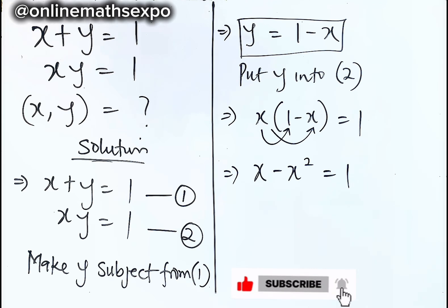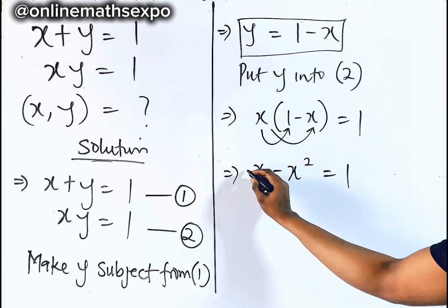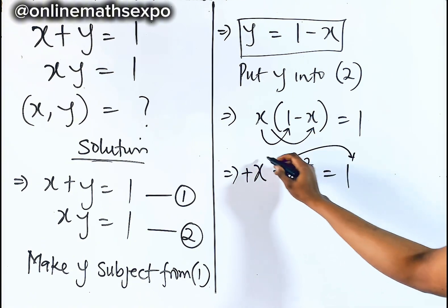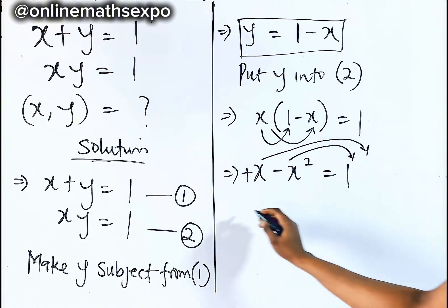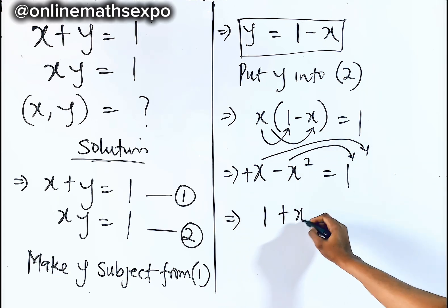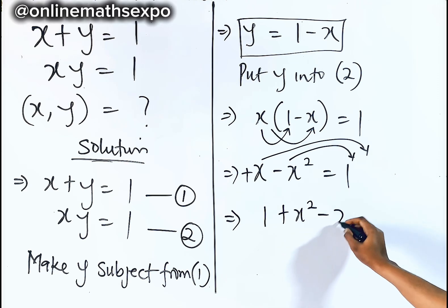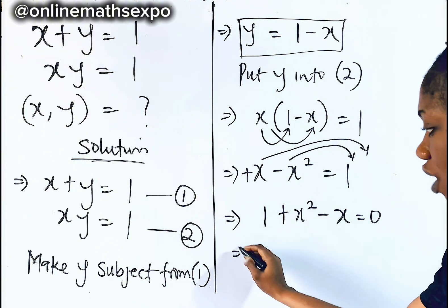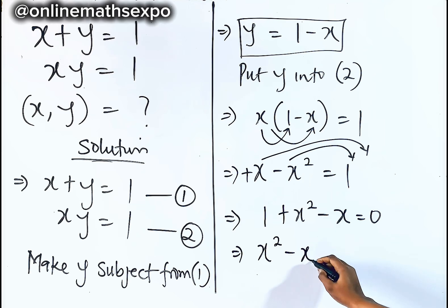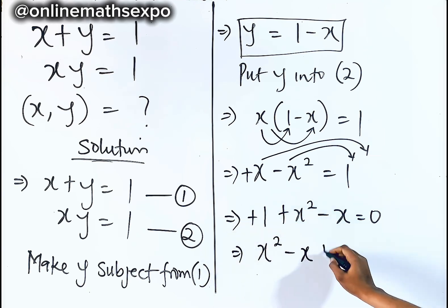To avoid working with negatives, we move terms to the right side. Taking this to the right side gives us positive x squared, and this gives us negative x, everything equal to 0. Rearranging so the highest power begins, we have x squared minus x plus 1 is equal to 0.